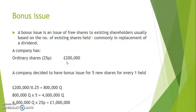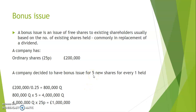So a company has £200,000 worth of shares at a 25p nominal value. This particular company decided to have a bonus issue of five new shares for every one that is held — so if you are a shareholder and you have one share, you will receive five new shares, which are free of charge.